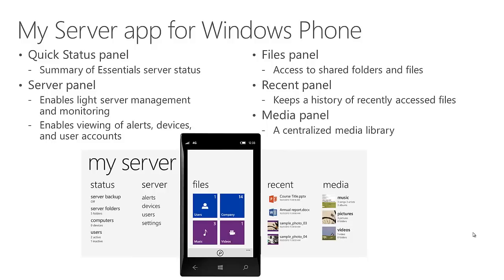There's a similar experience for Windows Phone, slightly different in look but with many of the same features. It includes a quick status panel showing a summary of the server's status, light server management tasks — viewing alerts, devices, and user accounts, and resetting passwords. The files panel provides access to shared folders and files. There's also a panel for recent activities for quick access to recently used items. Additionally, the Windows Phone app lets you stream music or video from the server directly to your phone if the optional media streaming component is installed.